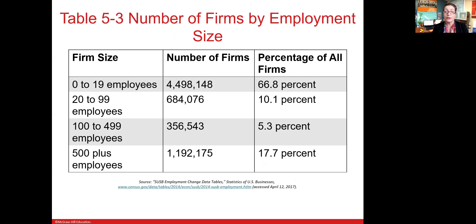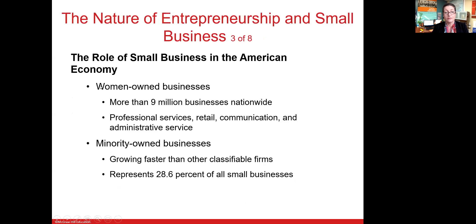Table 5.3 gives a summary of the number of small businesses that employ various levels of workers. Nearly 67% of small businesses are employing less than 20 employees. So the role of small business in the American economy is actually really important.